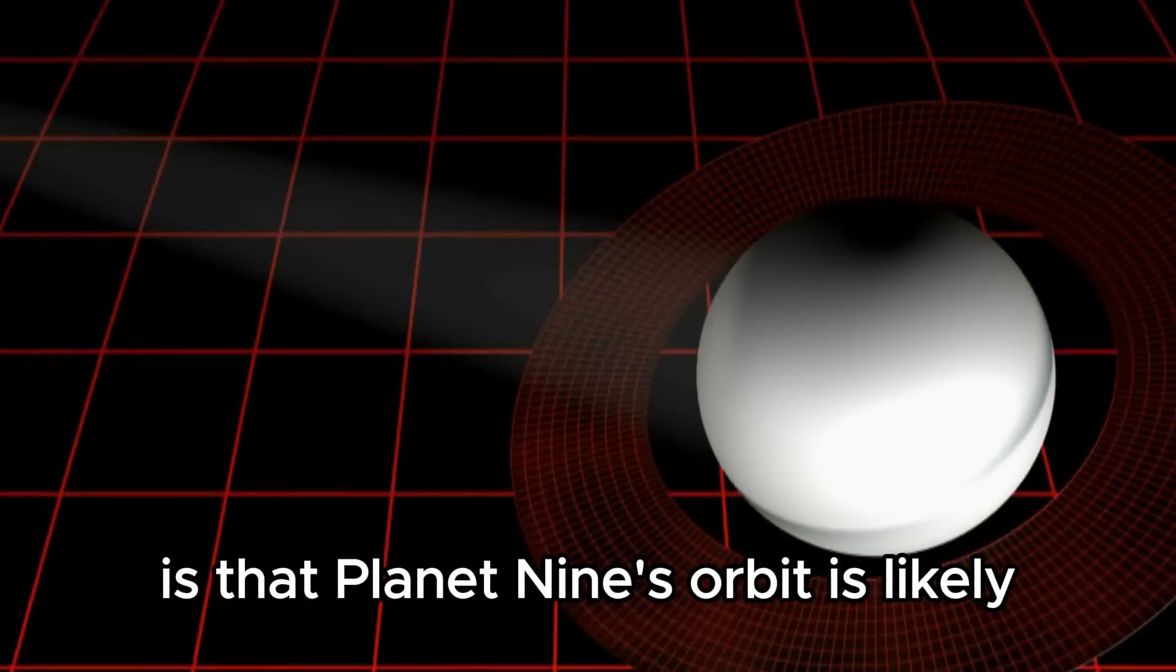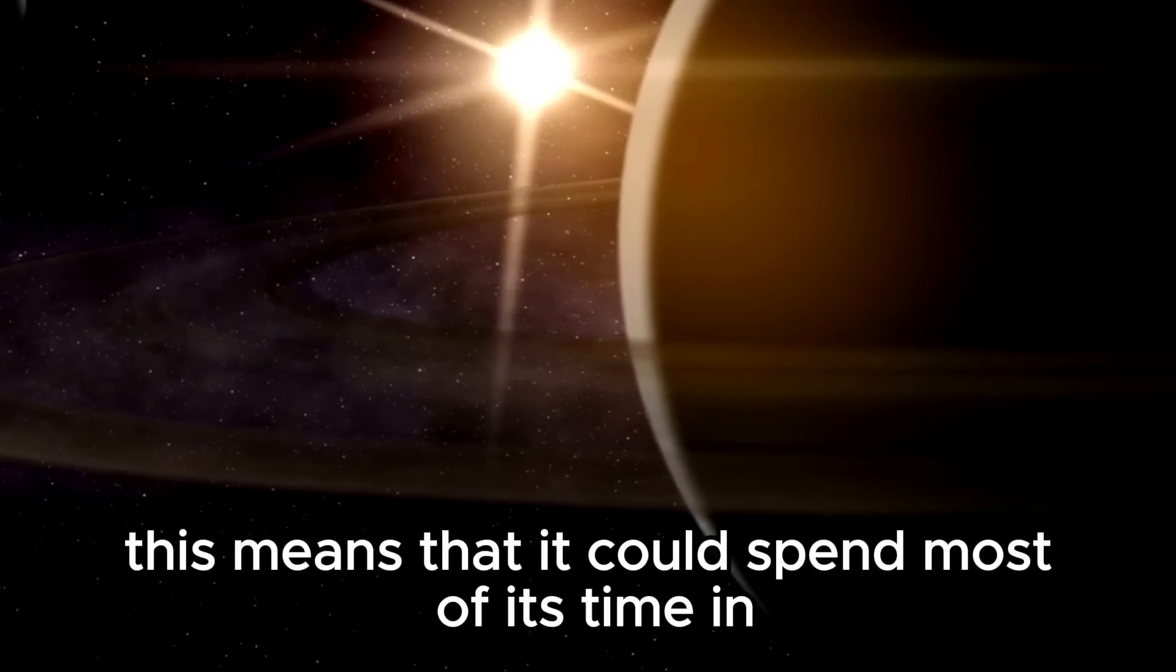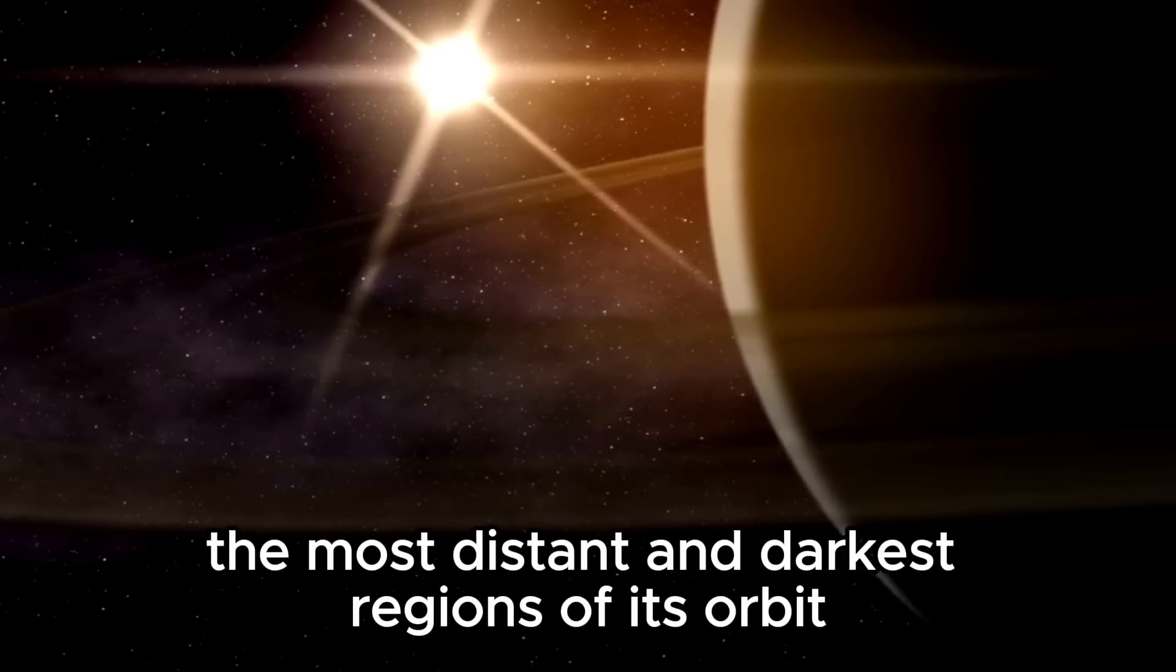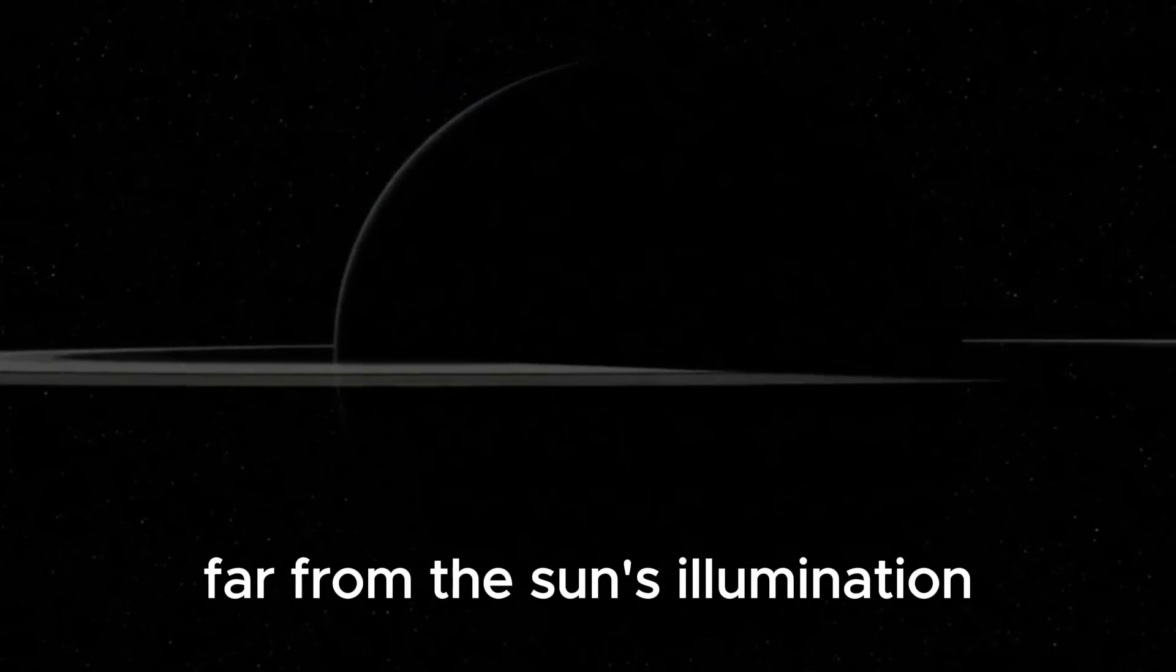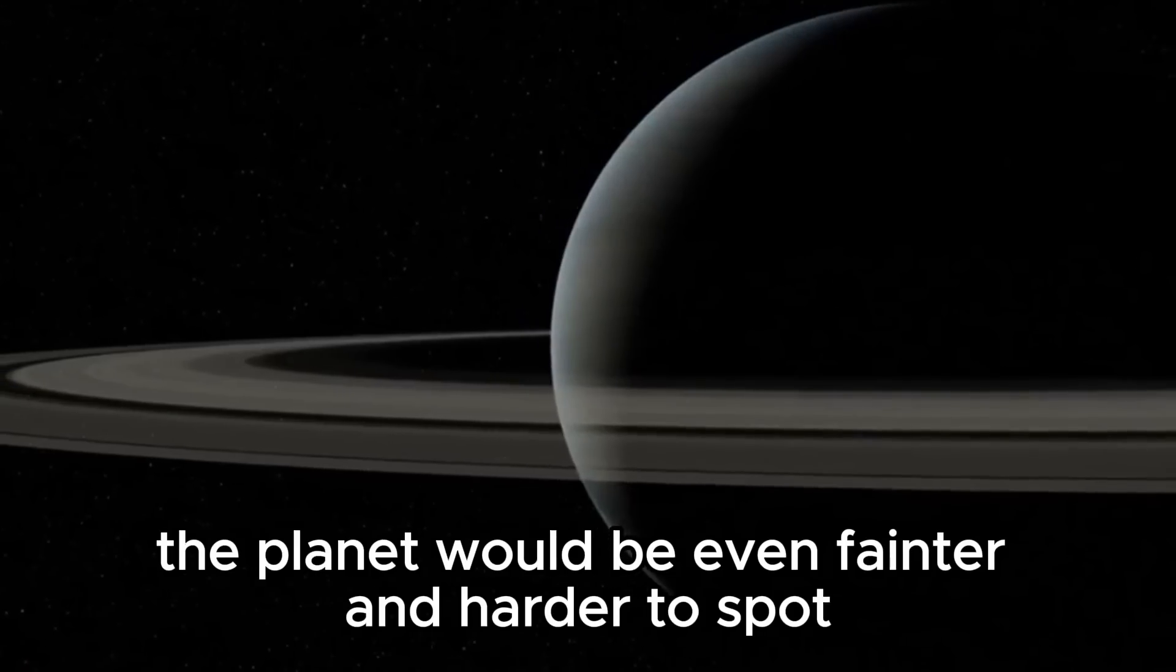The second problem is that Planet Nine's orbit is likely highly elliptical. This means that it could spend most of its time in the most distant and darkest regions of its orbit, far from the Sun's illumination. When it is at these farthest points, the planet would be even fainter and harder to spot.